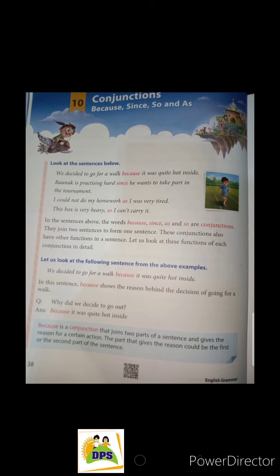Let us look at the following sentence from the example above: We decided to go for a walk because it was quite hot inside. In this sentence, because shows the reason behind the decision of going for a walk. Because is a conjunction that joins two parts of a sentence and gives the reason for a certain action.